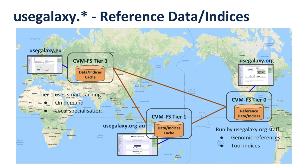At the moment each of the usegalaxy servers around the world has access to exactly the same reference data and tool indices, which is fantastic. This also removes a lot of the administration burden — we don't all have to download the data and index it for all the different tools, which can take a long time and use a lot of compute resources.